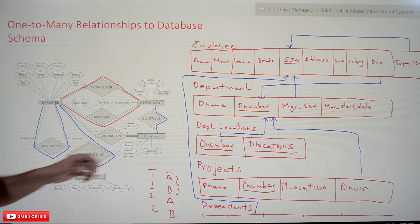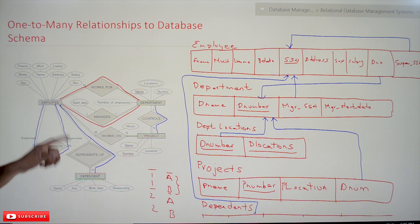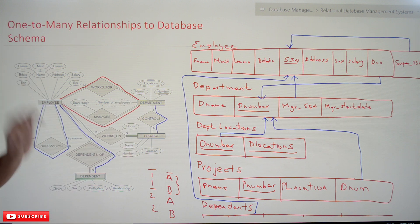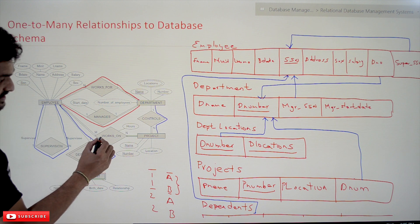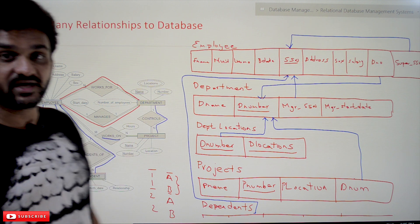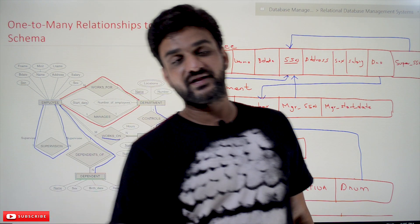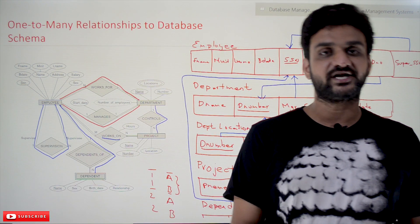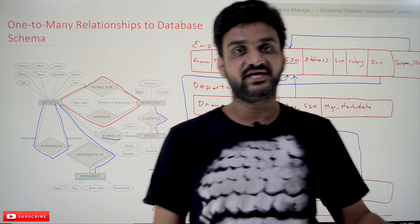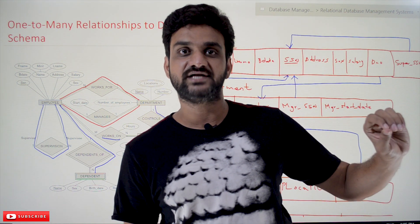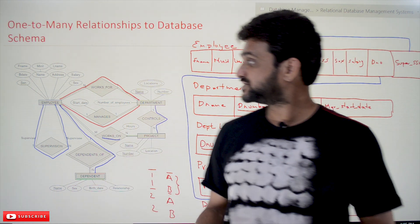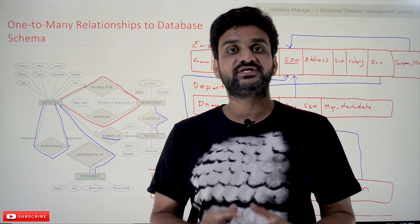Those are all the tables and relationships we have obtained. The only relationship left is 'works on,' which is a many-to-many relationship. We will cover this in the next video — it is very important to understand and we will go through it slowly.